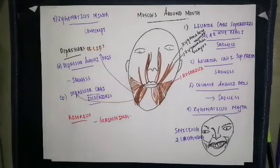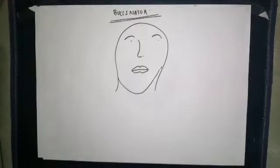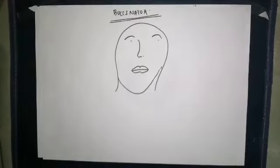Now the important muscles around the mouth: the buccinator and orbicularis oris. The buccinator is an important muscle present in the cheek region. It has three parts: upper, middle, and lower. The upper part originates from the maxilla opposite the molar teeth.